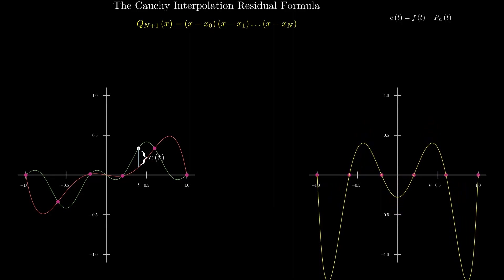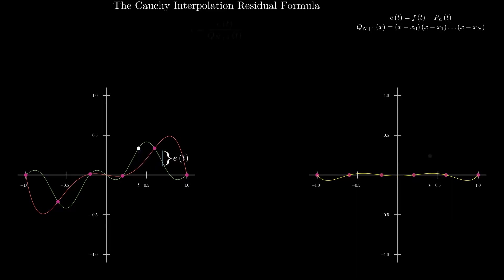Now we can scale q sub n plus 1 by a factor c without affecting the roots. We choose c so that when c times q sub n plus 1 is added to p sub n, the combination satisfies the interpolation condition at t. c is simply the error at t divided by the value of q sub n plus 1 evaluated at t. Adding c times q sub n plus 1 to p sub n gives r sub n plus 1, which interpolates at all the nodes and t as well.